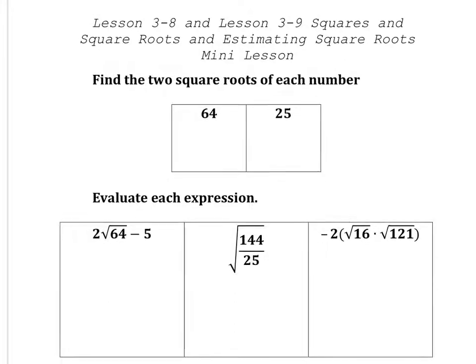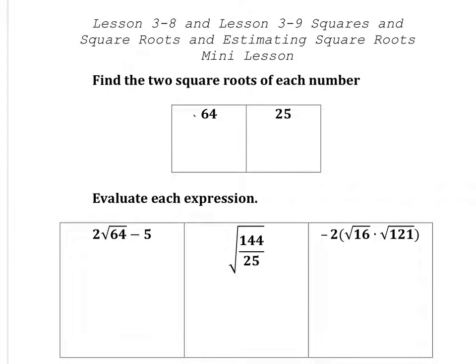So the square root of 64, what two numbers multiply to get you 64 and has to be the same, would be 8. You can also say negative 8 because technically negative 8 times negative 8 is 64.